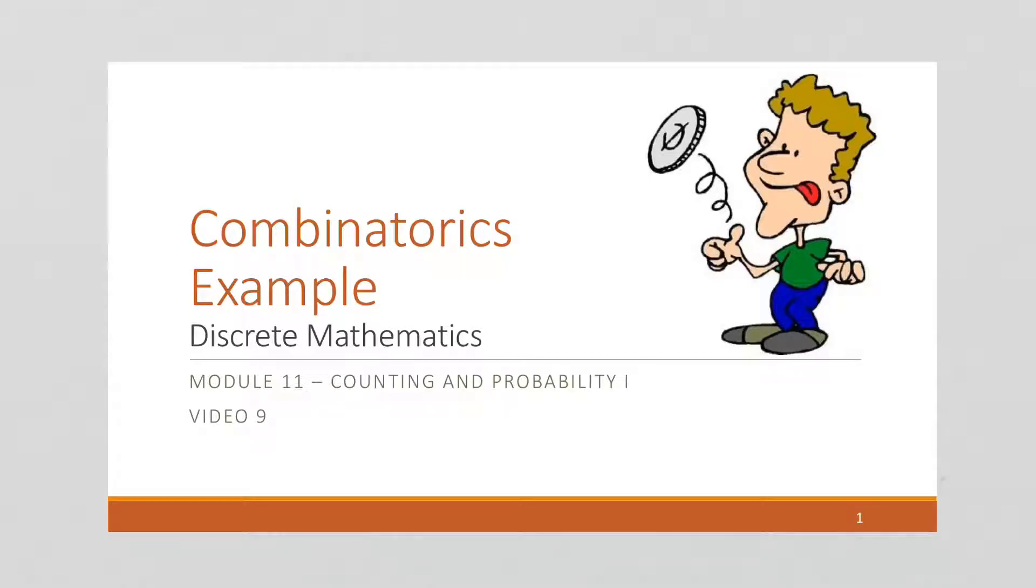Okay, so now we're going to do a combinatorics example. Permutations and combinations and counting things, all is called, mathematically, it's called combinatorics.